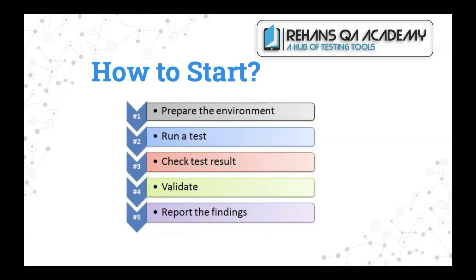Then execute your test — perform your test execution for the particular test scenario. Once you execute a query, check that you are getting the right output, validate it, and then report the findings. As part of this course session, we are going to see how to do this with automation testing following these sequential steps.